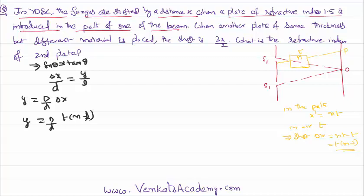In the problem, when a medium of refractive index 1.5 is placed, the shift is x. So we can rewrite this formula as x equals D over d times t times (1.5 - 1).